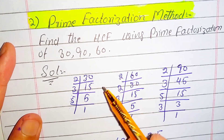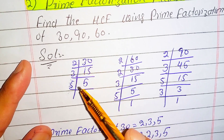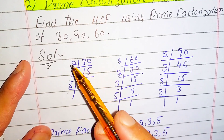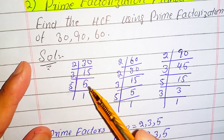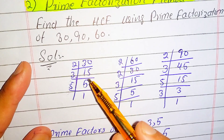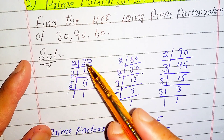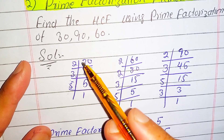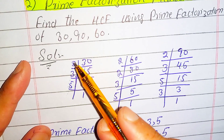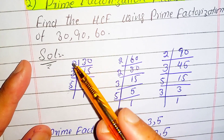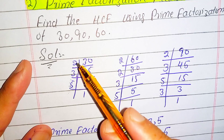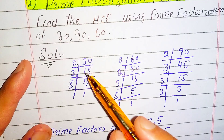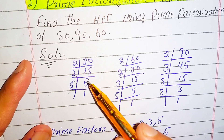We do the prime factorization of 30, 90, and 60. For 30: 2 times 15 is 30, 3 times 5 is 15, and 5 times 1 is 5. We divide the number by the lowest prime factor. So we divide 30 by 2, which equals 15; divide 15 by 3, which equals 5; and 5 divided by 5 equals 1.